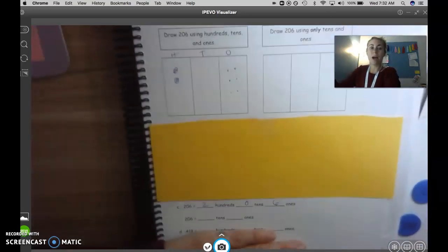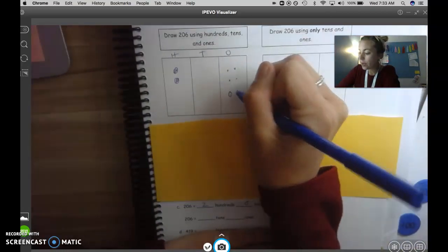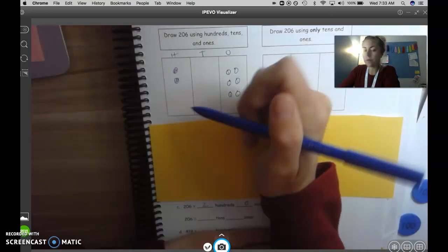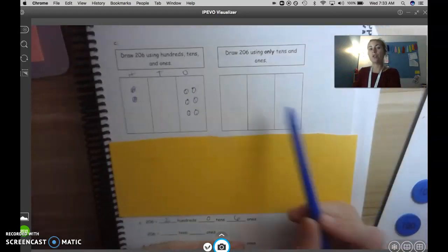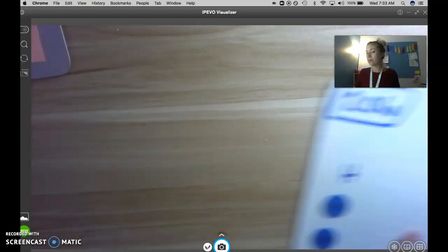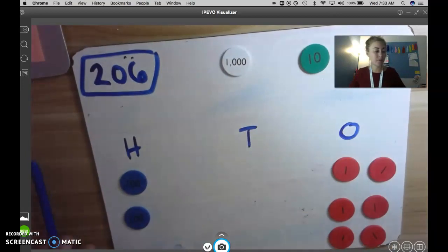You can draw it just like I did like little dots or you can draw it with a circle and a one in the middle. And this one for the hundreds would be a circle and the hundred in the middle. Now I want to do 206 using only tens and ones. So I'm going back to my place value chart. Now I can't use any hundreds for this next challenge. I have to use only tens and ones.